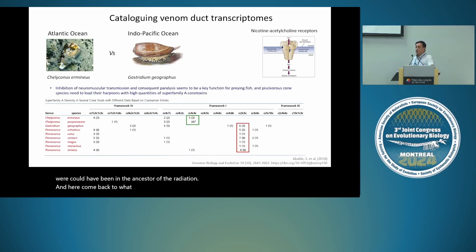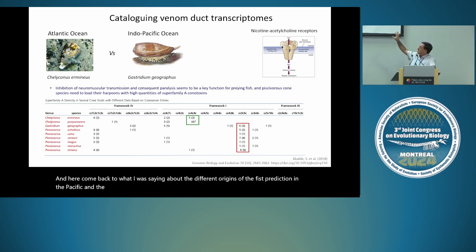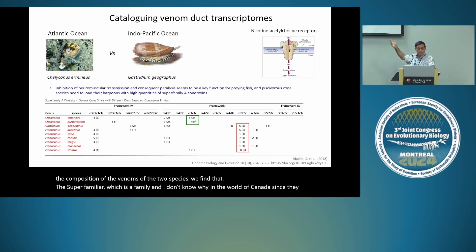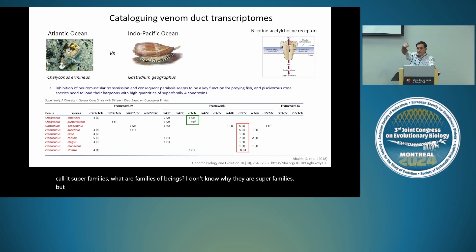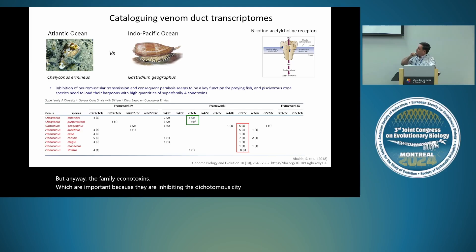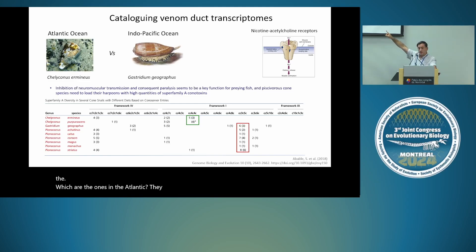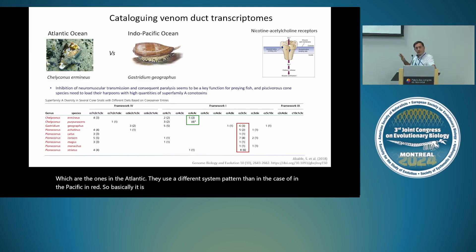Coming back to the different origins of fish predation in the Atlantic and Indo-Pacific: when we look at the composition of the venoms of the two species, we find that the family A conotoxins — which inhibit nicotinic acetylcholine receptors — use a different cysteine framework in the Atlantic species compared to the Indo-Pacific. This supports the independent origin of the two venoms that are convergent in preying on fish.